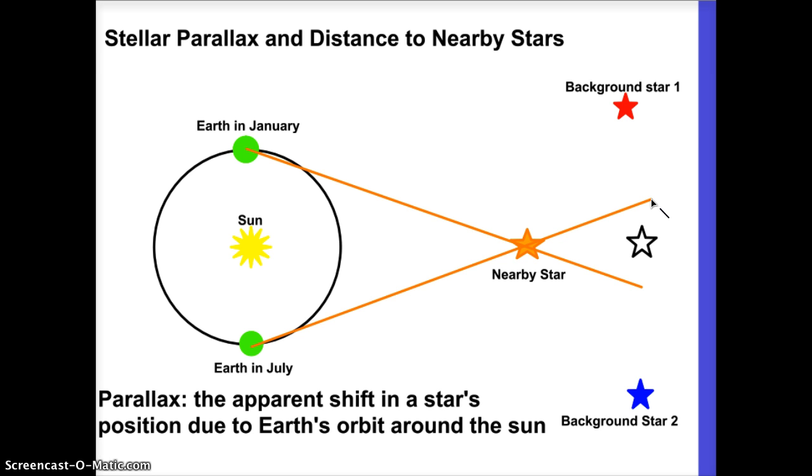And we would call this stellar parallax. And it's this apparent shift in a star's position, because Earth is orbiting around the sun. And in fact, the existence of this parallax proves that the Earth orbits the sun. If the Earth were sitting still, then parallax would not occur.